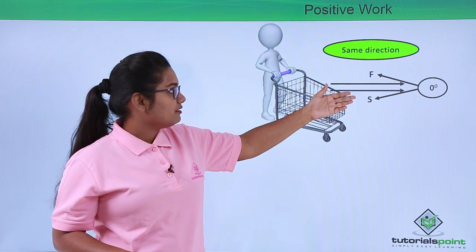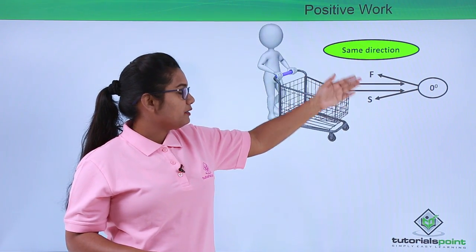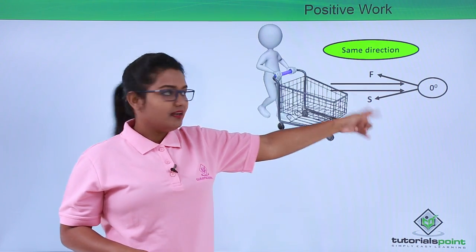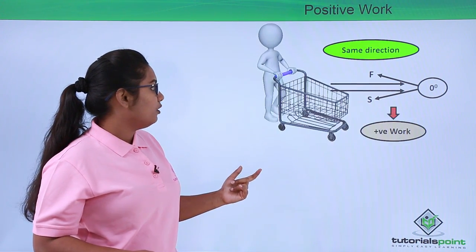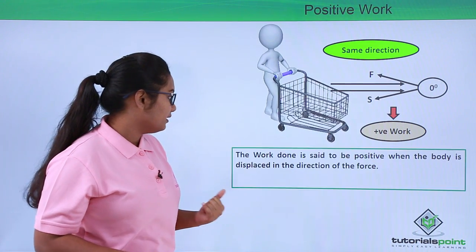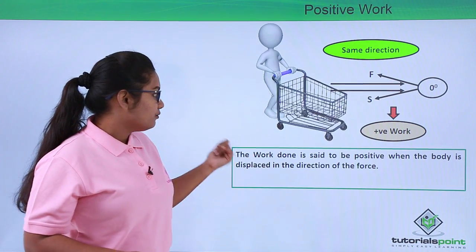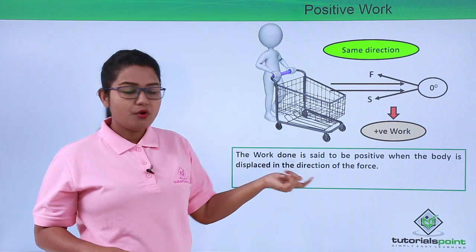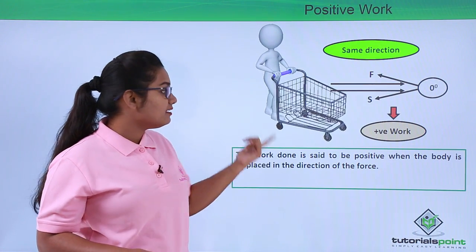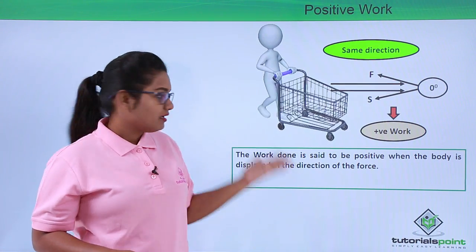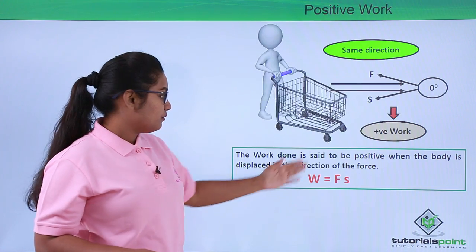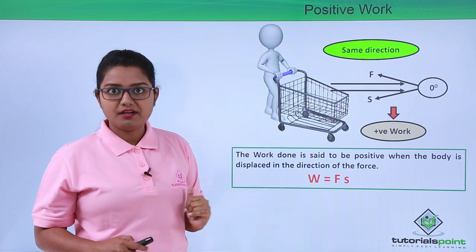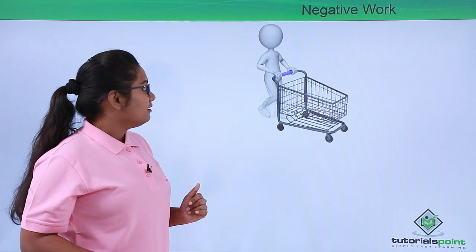Since force and displacement are in the same direction, the angle between them is zero degrees, and thus it is called positive work. The work done is positive when the body is displaced in the direction of the force, so W equals F times S.